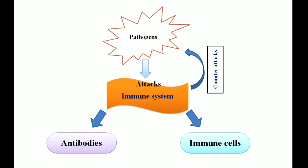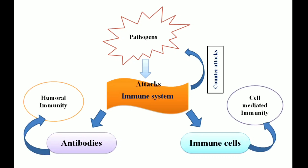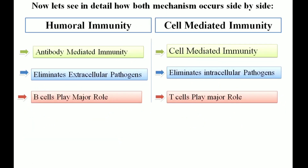Our immune system either attacks by making antibodies, or immune cells come into action to counter-attack the pathogen. So the immune system works in two modes: the antibody-mediated immune system, which falls under humoral immunity, and the cell-mediated immune system, which falls under the immune cell response mechanism.